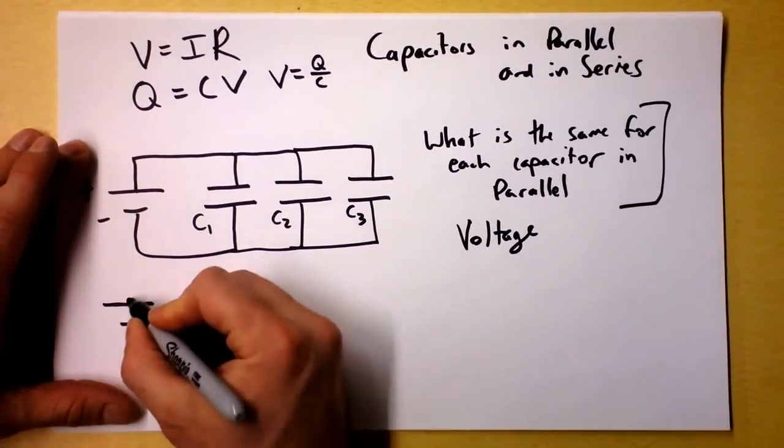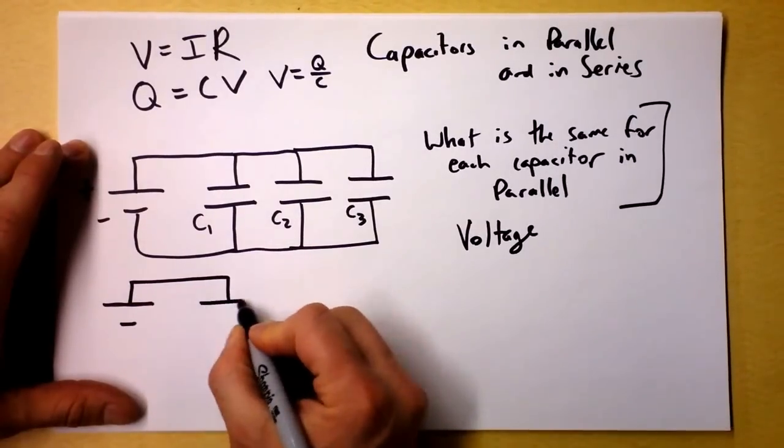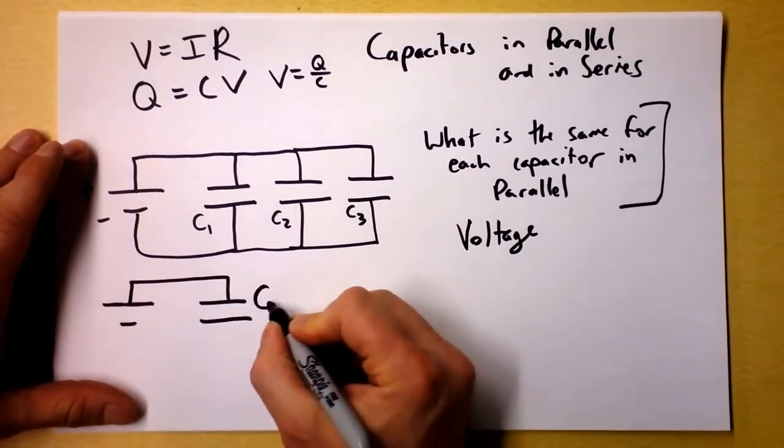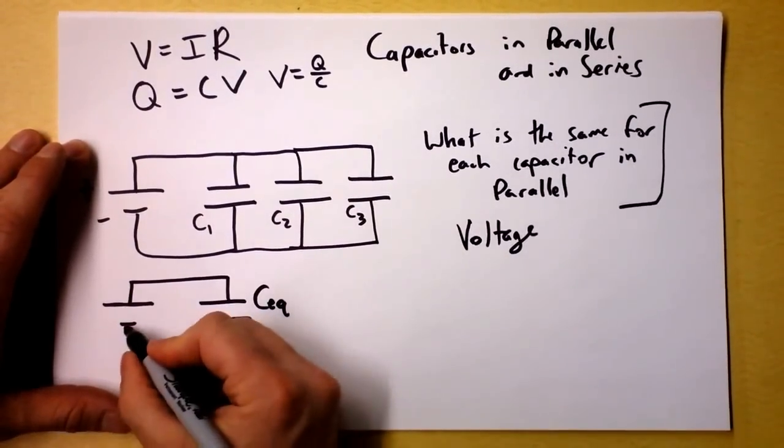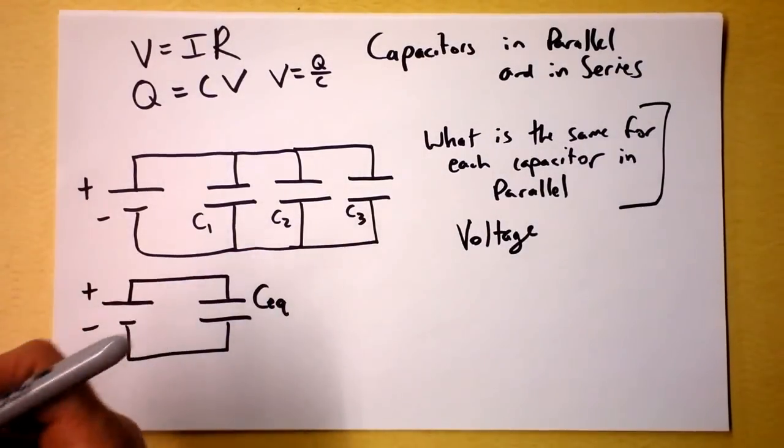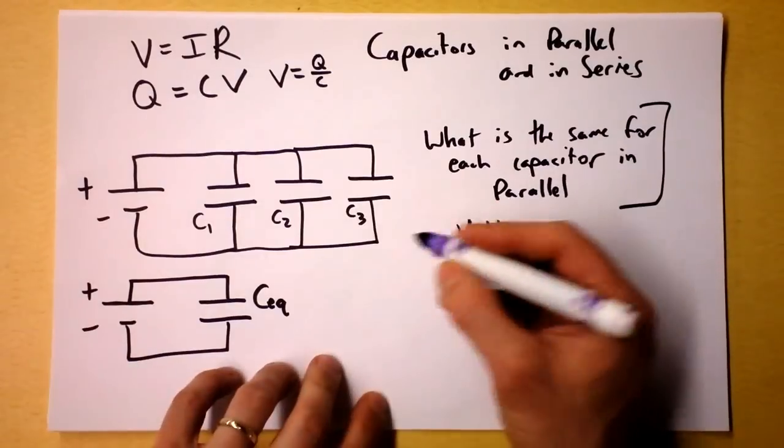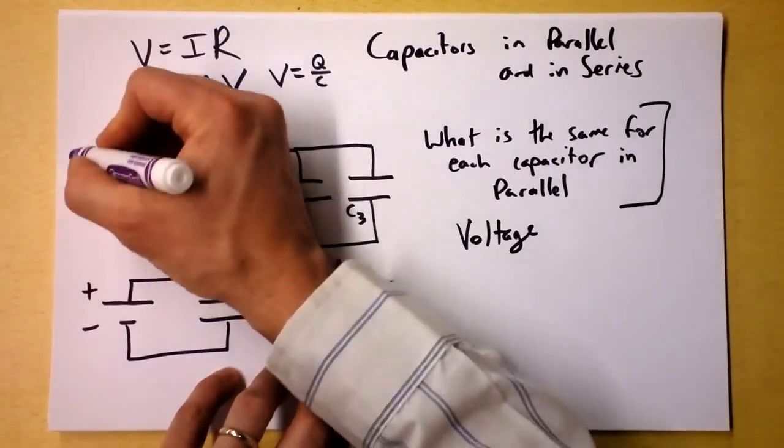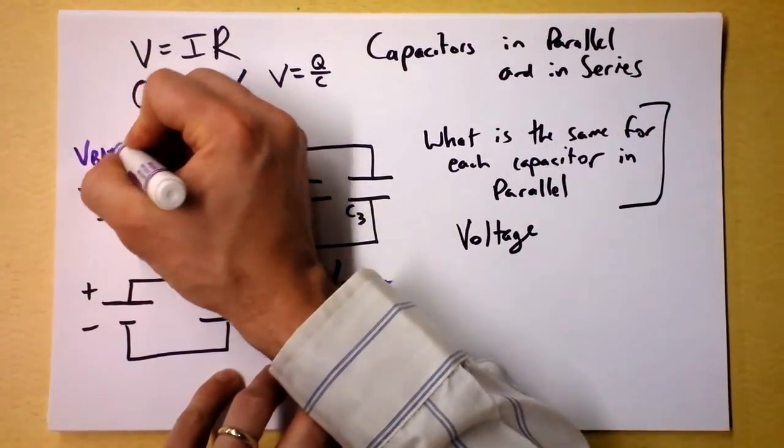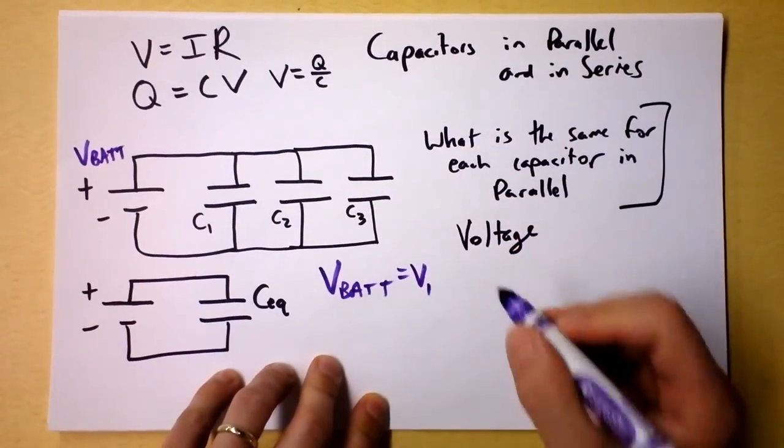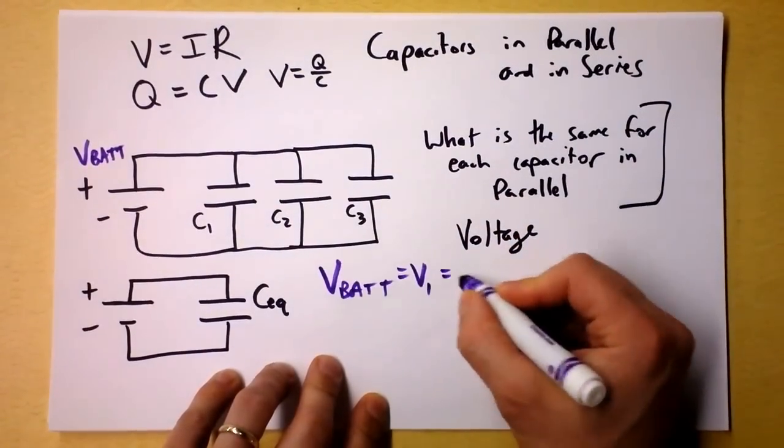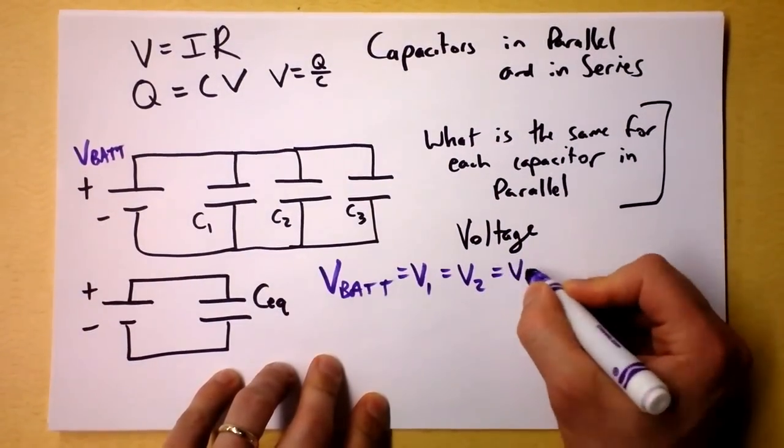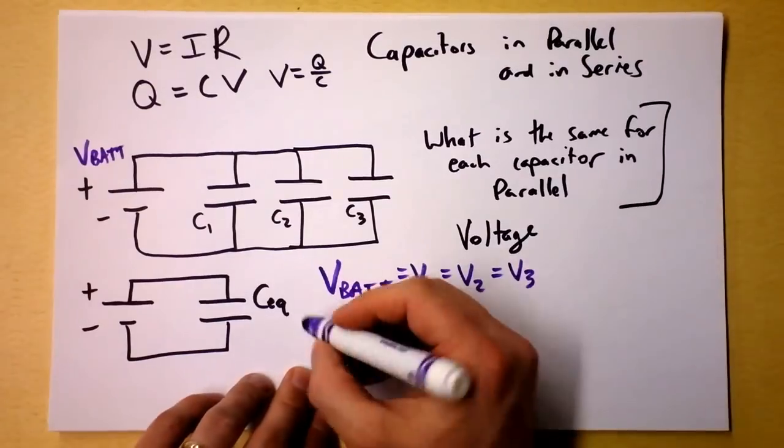First of all, I'm going to draw our equivalent circuit, and that is just a single capacitor here that has an equivalent capacitance, C equivalent right there. Plus and minus. And we'll put a little bit of color on this slide before we're all finished. Let's say that the voltage of the battery, that's over here, V battery,